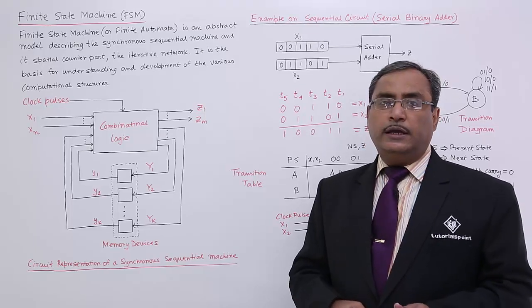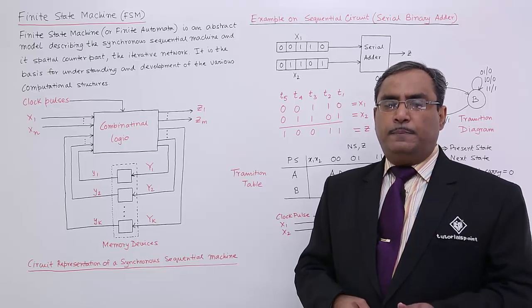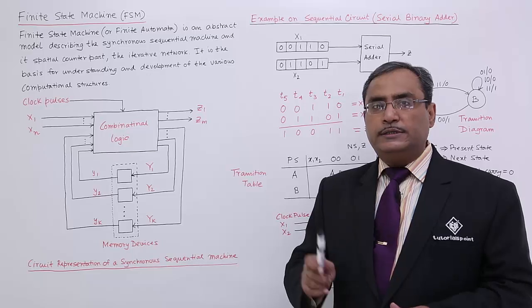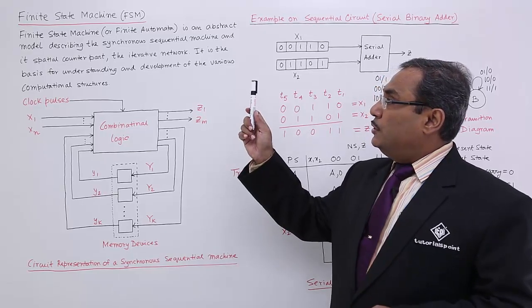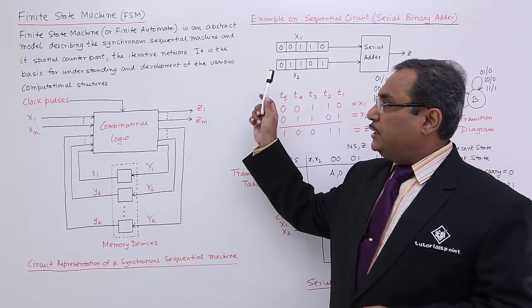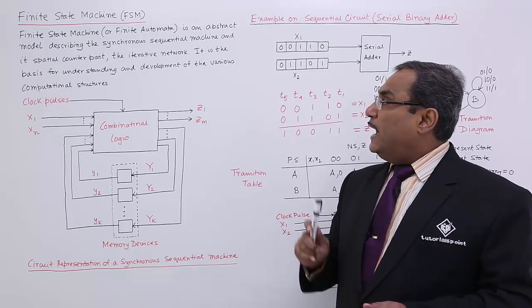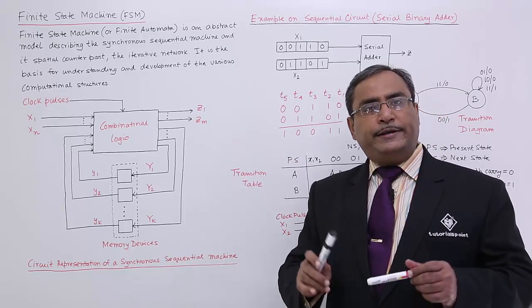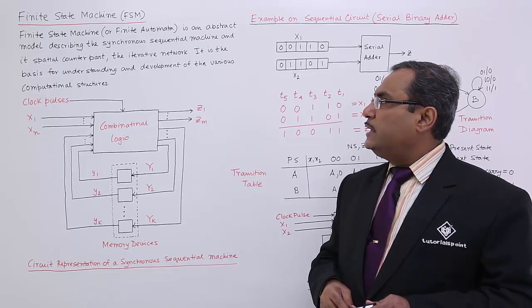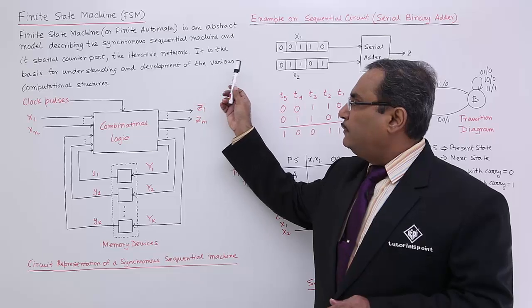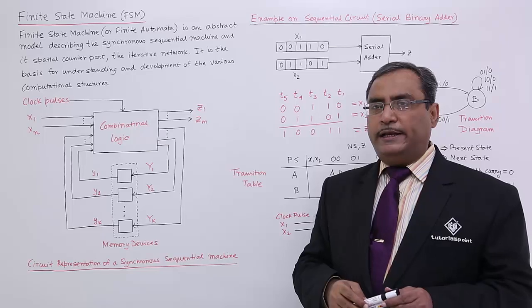In the case of a combinational circuit, inputs will decide the output. In the case of a sequential circuit, the present input and previous output will decide the next output. FSM describes the synchronous sequential machine — it is a time-dependent phenomenon and forms the basis for understanding and development of various computational structures.